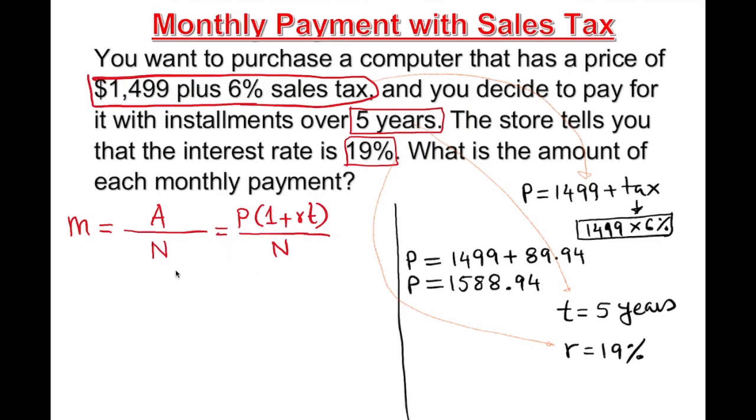We have everything now, so we substitute into the formula. P is 1,588.94, open parenthesis, 1 by default plus the rate 19% times t which is 5 years. This is simple interest, you don't convert to anything. N is going to be 12 times the number of years, which is 5, so 60 monthly payments. This gives us 60 on the bottom.